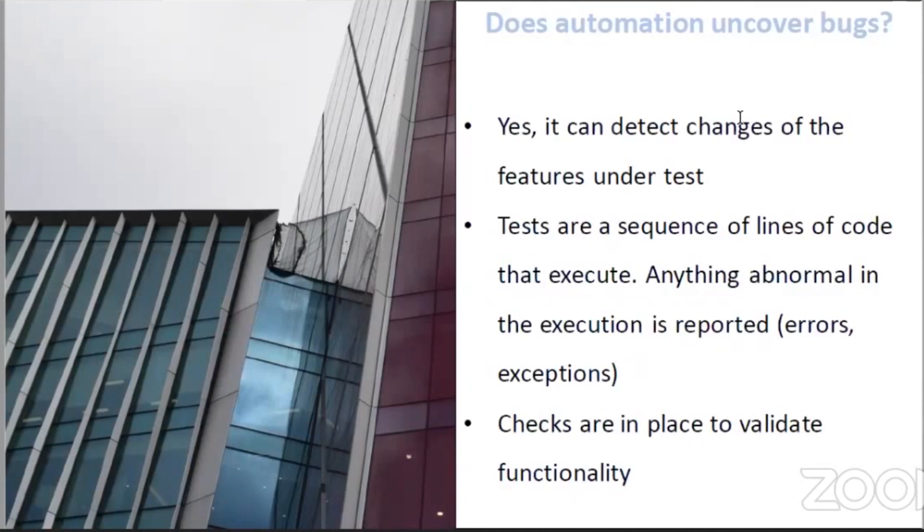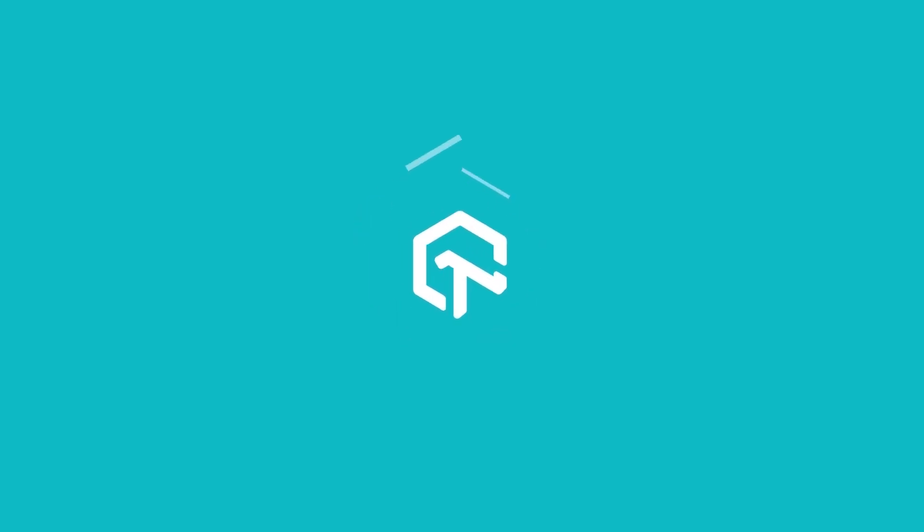Maybe some other team's change, or maybe someone in your team changed something without letting you know. So your tests can uncover bugs as long as the bugs are in the feature that you were actually testing. I hope this makes sense.